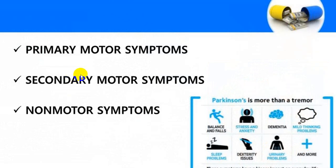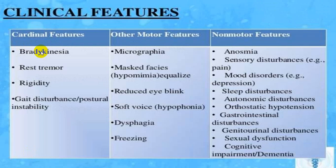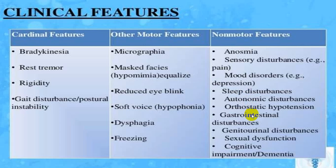Primary motor symptoms, secondary motor symptoms, and non-motor symptoms are all present. Cardinal features: TRAP — Tremor, Rigidity, Akinesia, Postural instability. Other motor symptoms include micrographia, mask-like face or hypomimia, reduced eye blinking, soft voice or monotonous speech, dysphagia, and freezing. Non-motor symptoms include anosmia, sensory disturbances, mood disturbances like depression, sleep disturbances like insomnia, autonomic disturbances, bladder and bowel dysfunction, orthostatic hypotension, GI disturbances like constipation, genitourinary disturbances, sexual disturbances, cognitive impairment, and dementia.